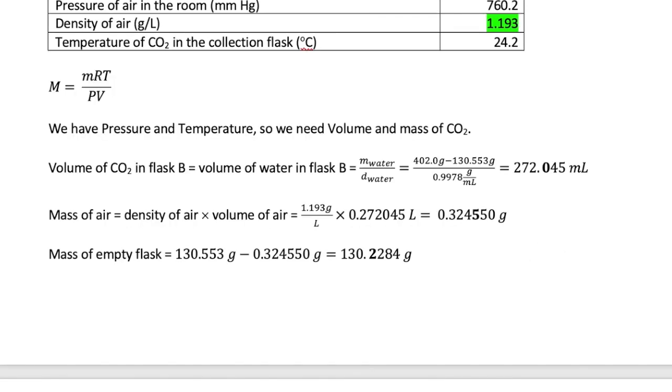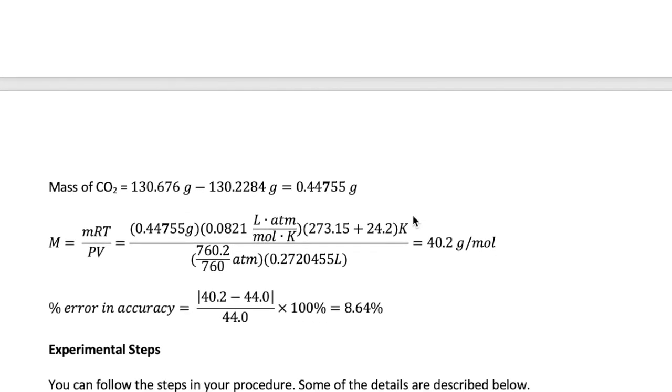Now for mass of CO2, first we must determine the mass of air by multiplying the air's density by its volume. One mistake that often is made here is to forget the unit of air's density, which is grams per liter, not grams per milliliter, like the density of water. So the resulting mass of air is very small, at about 0.325 grams. Now, we can calculate the mass of the empty flask, which is just the mass of the foil, plus flask, plus air, minus the mass of air. This number is 130.2284 grams. Lastly, we can now obtain the mass of CO2 by taking the mass of the flask when it's full with CO2 and subtracting the mass of the empty flask. This gives us 0.44755 grams.